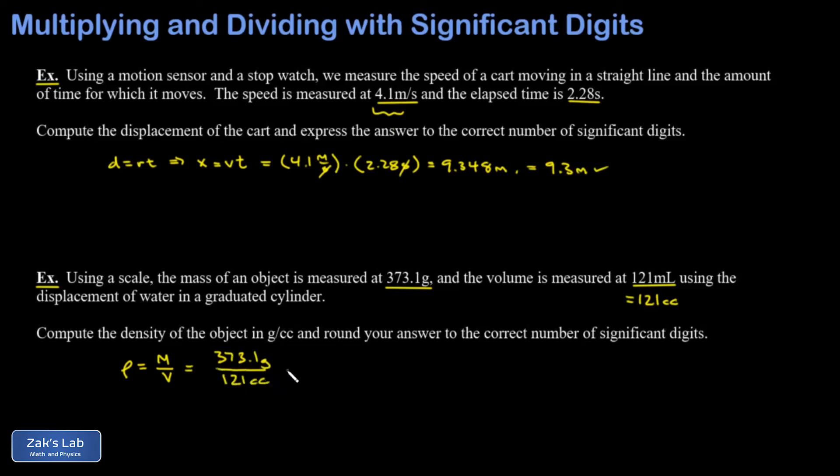And we get 3.083 grams per cubic centimeter. There were additional decimals in my calculator but I know I don't need them because we're going to round off to three significant digits. That's the number that had the fewest significant digits in the problem. So we're going to round this down this time because I have a 3, we round down to 3.08 grams per cubic centimeter and we're done.